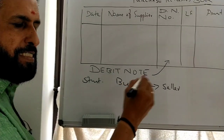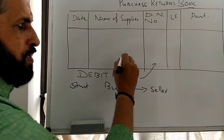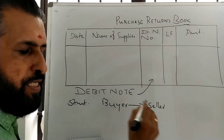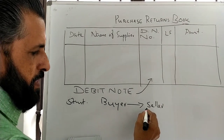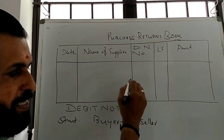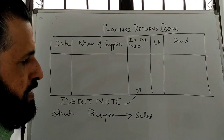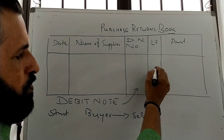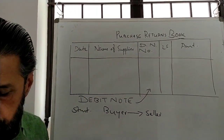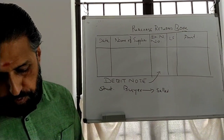The return book uses a Debit Note. The Debit Note number is recorded, along with the amount. This is the Purchase Returns Book.